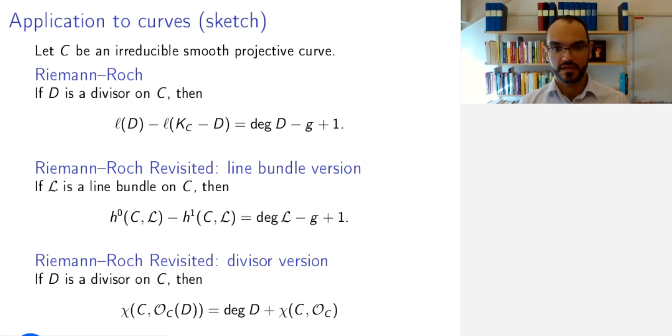You can restate it in terms of divisors using the Euler characteristic. Again, I leave this as an exercise to you to show that if D is a divisor on C, then the Euler characteristic of O_C(D) is equal to the degree of D plus the Euler characteristic of the structure sheaf of C. Not to show this, that would be showing the Riemann-Roch theorem, you're welcome to try to do that, but to show that this is equivalent to the other ones.